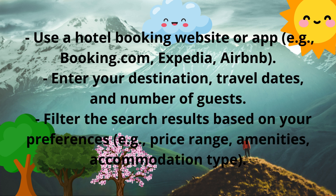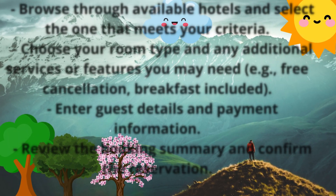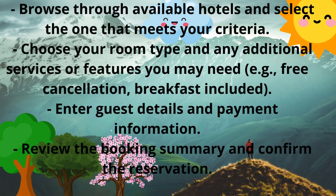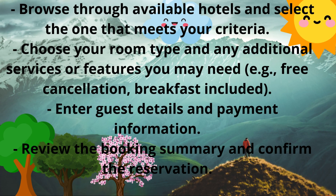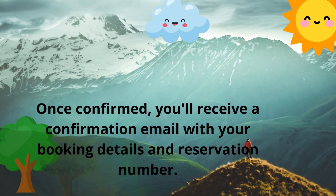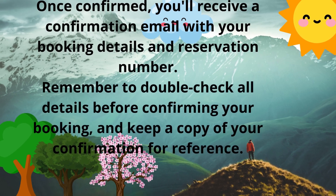Filter the search results based on your preferences, e.g., price range, amenities, or accommodation type. Browse through available hotels and select the one that meets your criteria. Choose your room type and any additional services you may need, e.g., free cancellation or breakfast included. Enter guest details and payment information, then review the booking summary and confirm the reservation. Once confirmed, you'll receive a confirmation email with your booking details and reservation number.